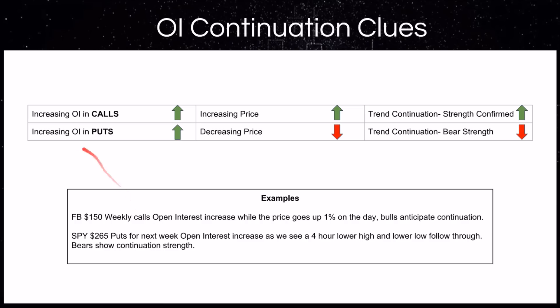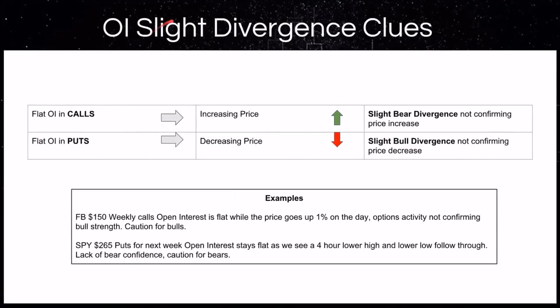Now for divergence clues. If we see flat open interest in calls and the price is going up, that's a bit of a bear divergence — a red flag telling us the price is still going up but people are not betting by buying calls that it's going to see continuation. So if the Facebook $150 weekly calls open interest is flat while the price goes up 1%, the options activity is not confirming the bull strength and we need to be a little bit cautious.